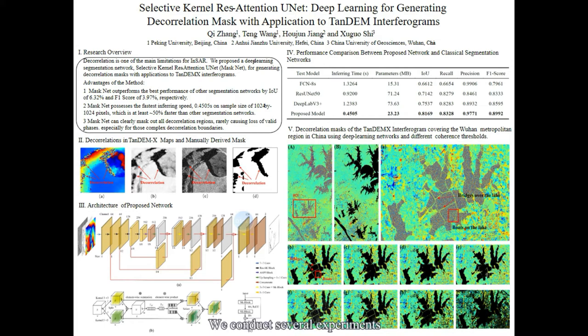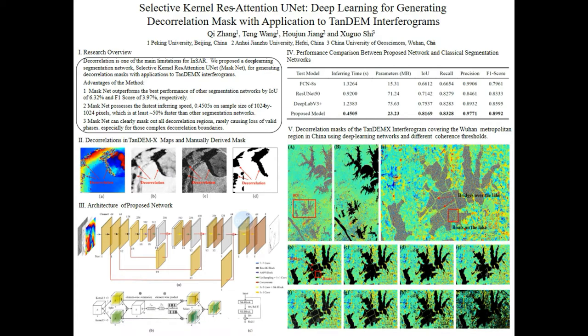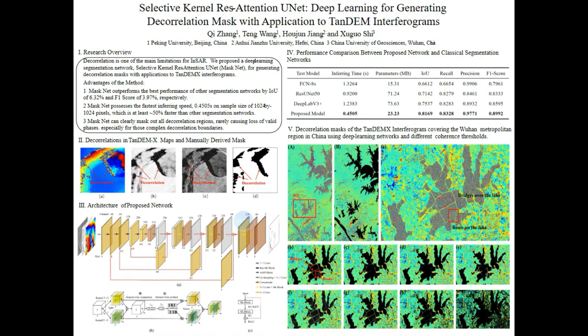We conduct several experiments to determine the training strategy and parameters of the network, including the sample size, batch size, loss function, and the downsampling scheme, to optimize the network performance.